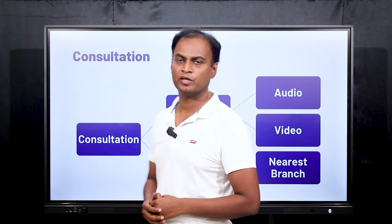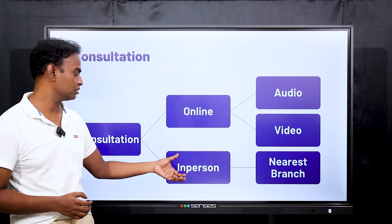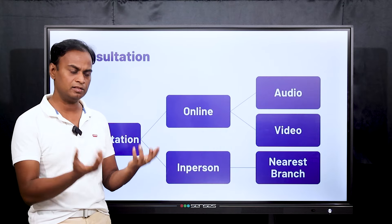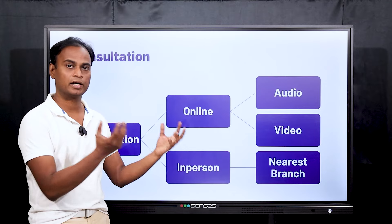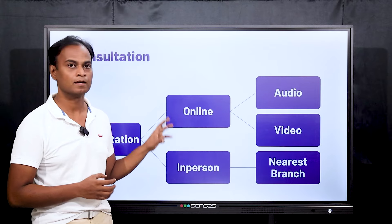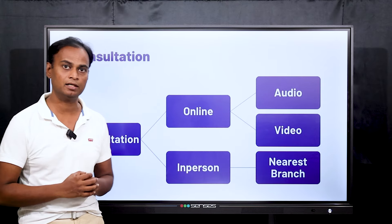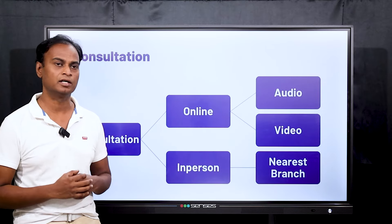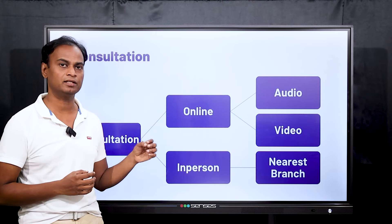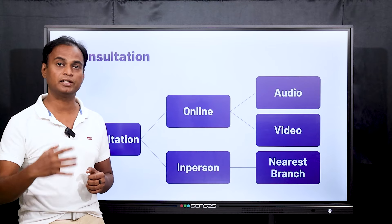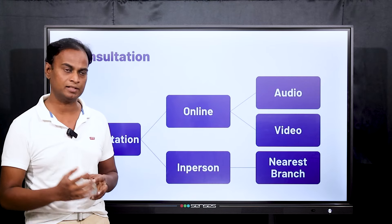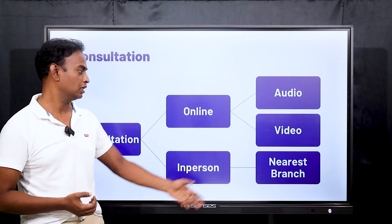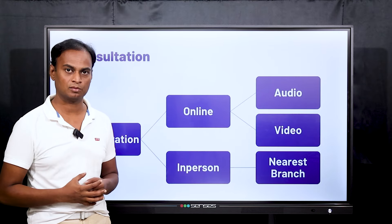Coming to the treatment of anal fissure, we have two types: online treatment and in-person treatment. In online treatment, you can have an audio call or video call with us. You can share any reports, or take further reports locally with our advice and send them to us electronically. We will ship medicines to your doorstep wherever you are in India or in the world. We have patients in the US, UK, and France. If in India it takes two to three days; in the US four days; any other country around five days. If you want to consult in person, inquire about the nearest branch, fix an appointment, and come to the clinic for treatment.